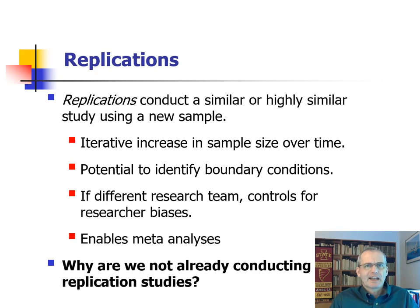The systematic and widespread engagement in replication studies is another methodological advancement that we should not only consider but promote. Replications conduct a similar or highly similar study using a new sample. The advantages are that replications lead to iterative increases in sample size that will improve our confidence in the reported findings. Replications also enable a systematic probing and understanding of boundary conditions of the reported effects. Replications by a different research team control for researcher-specific biases. Finally, replications enable the just-discussed meta-analyses.